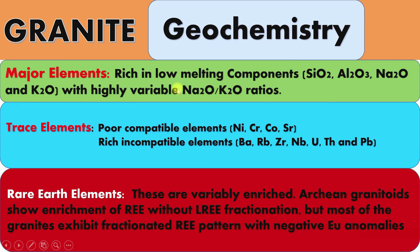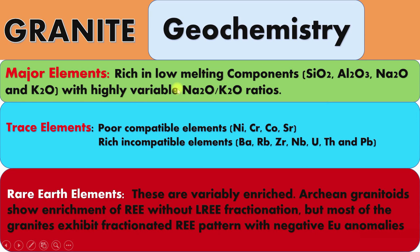Regarding the geochemistry of granites, there are three types of elements: major elements, trace elements, and rare earth elements. When we see major elements, granites are rich in low-melting components — particularly SiO₂, Al₂O₃, Na₂O, and K₂O — with highly variable Na₂O and K₂O ratios.